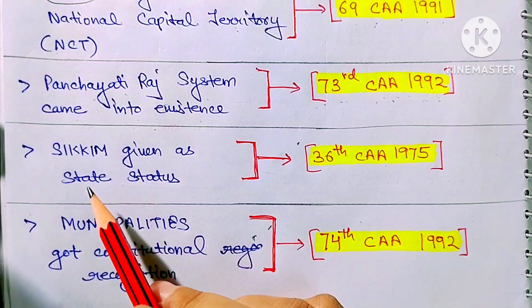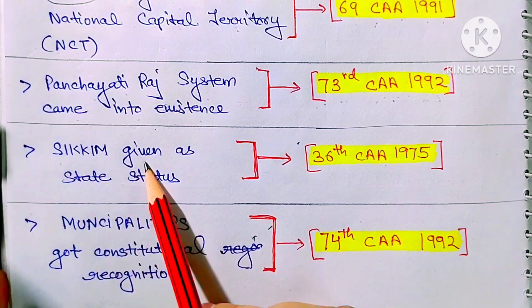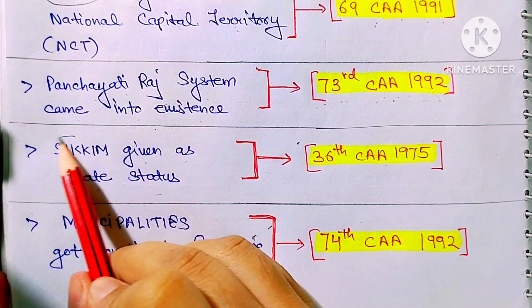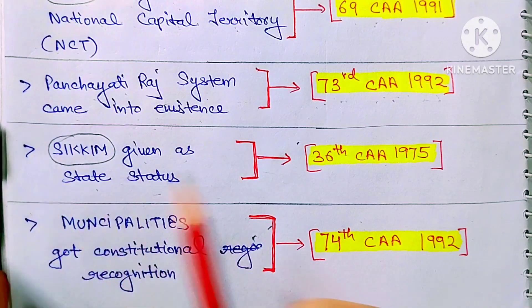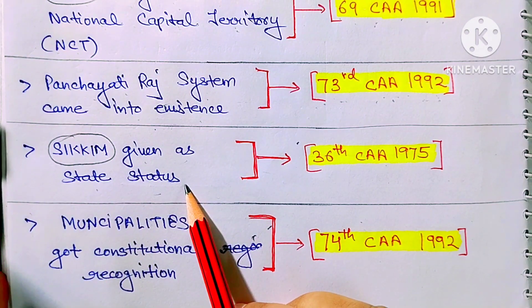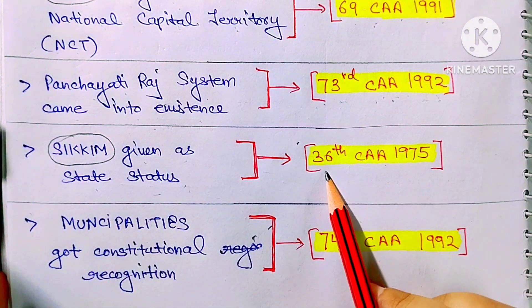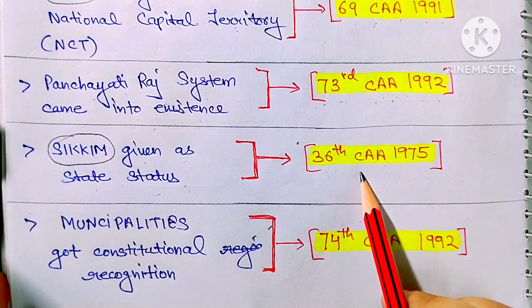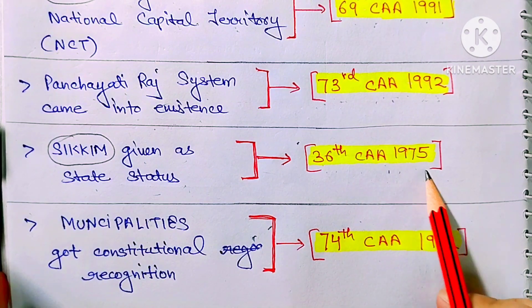Next: Sikkim was given state status in India through the 36th Constitution Amendment Act 1975.